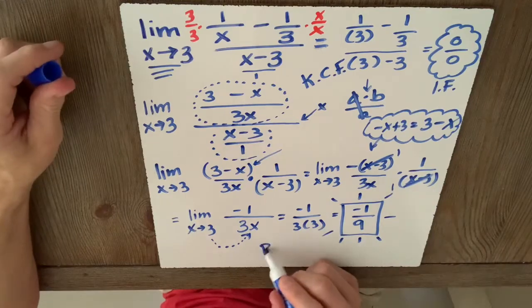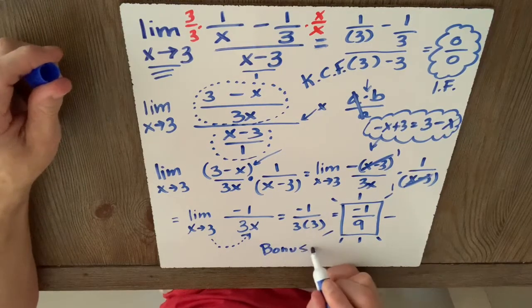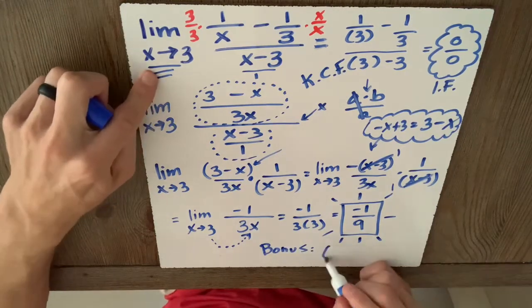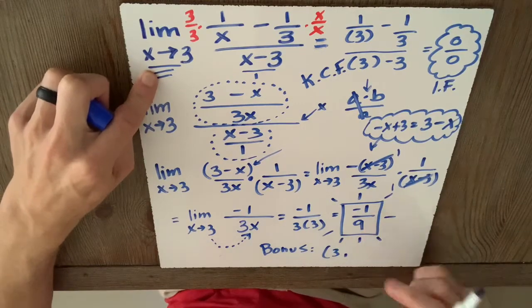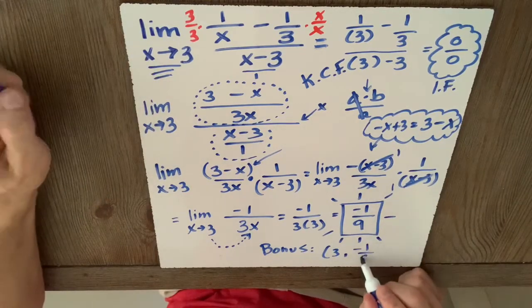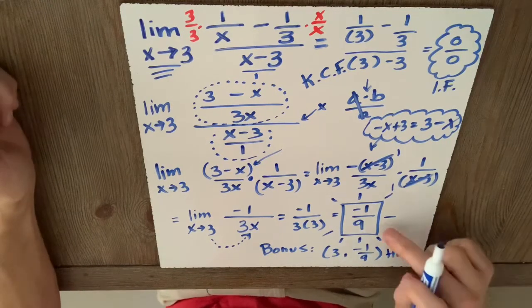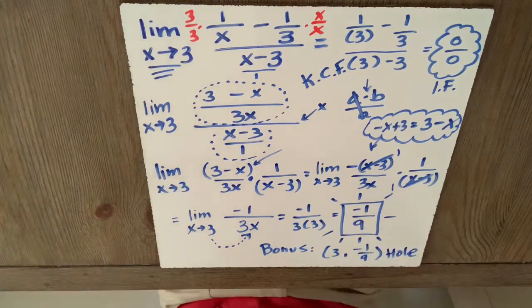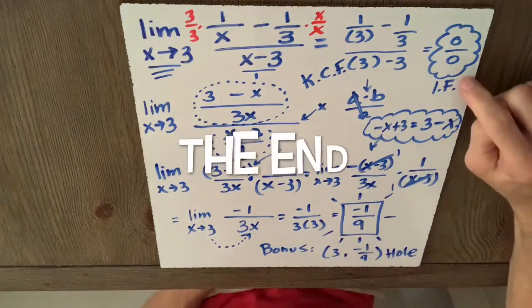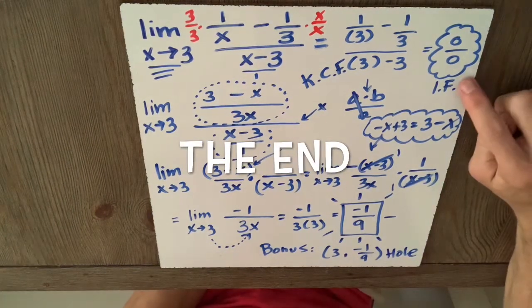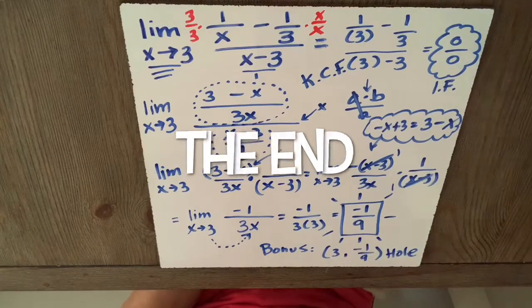What's the hole? This is bonus. Well as x heads towards 3, remember the limit is the trend in y. Y is trending towards 1 over 9. That's the hole. But the answer is the y-coordinate of the hole. How did I know I had a hole? I got this indeterminate form, which means we're taking the limit at a hole.